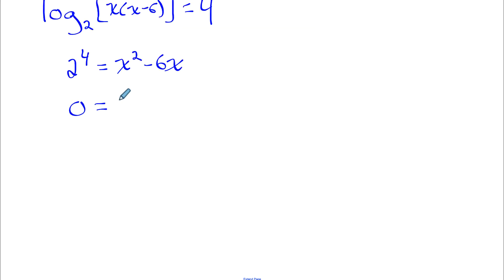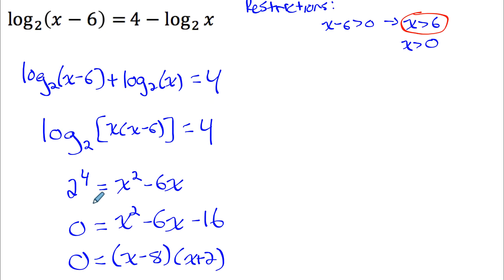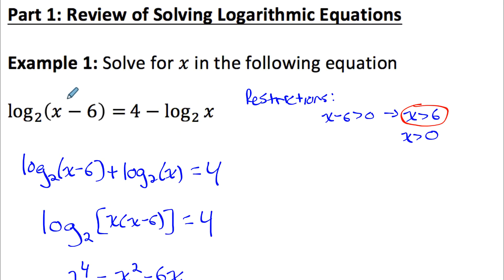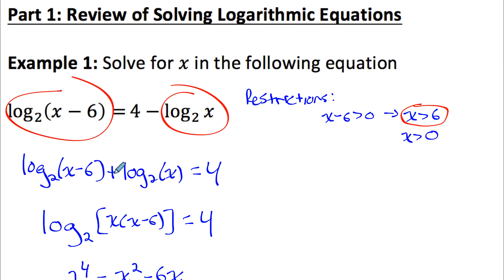Now it's a quadratic, so I set it to zero: x squared minus 6x minus 16 equals 0. Factoring gives roots x equals 8 and x equals negative 2. But negative 2 is not bigger than 6, so it is an extraneous root. Plugging x equals 8 makes both arguments positive (2 and 8), so the log functions are defined. Plugging in negative 2 makes both arguments negative, so those log functions would be undefined — it can't be an answer.